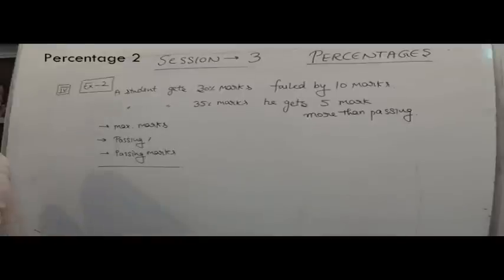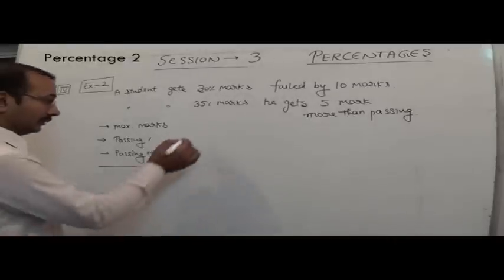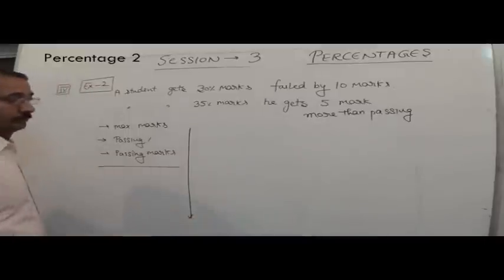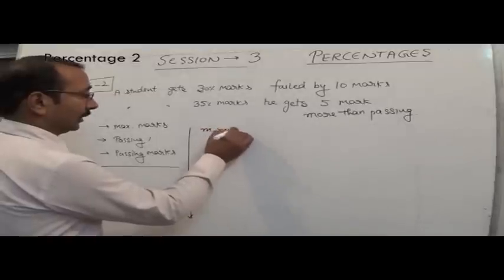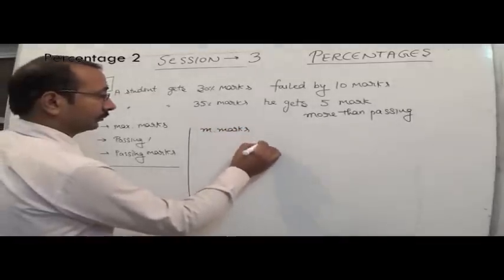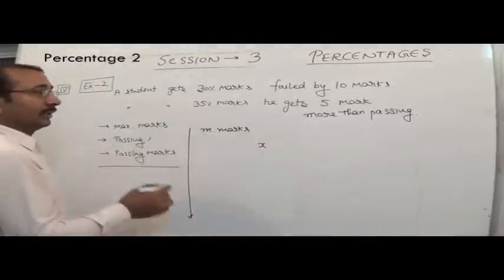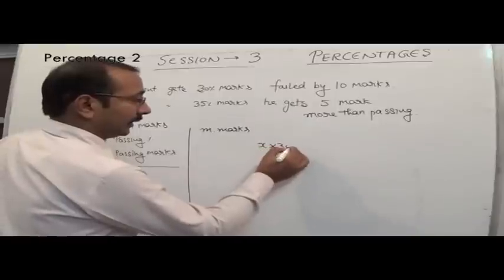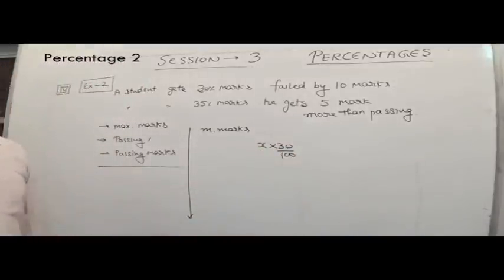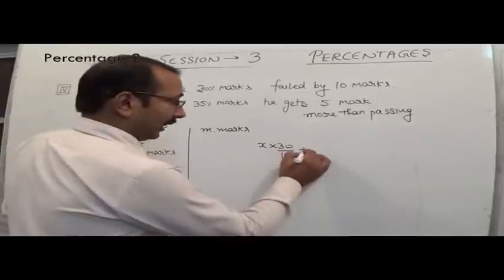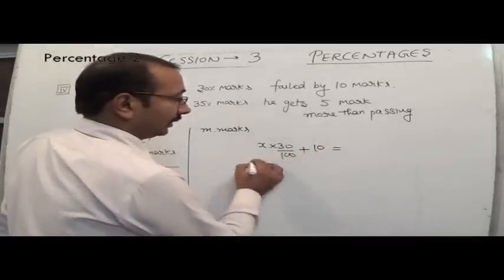When you have to answer a question of this type, we have two approaches. The first is: let us assume that the maximum marks are x. When he gets 30%, it means he gets x × 30/100, and he fails by 10 marks — meaning when we add 10 here, that gives us the passing marks.